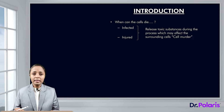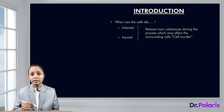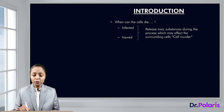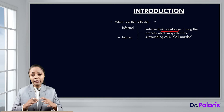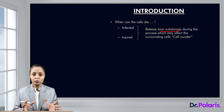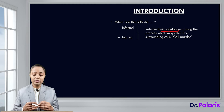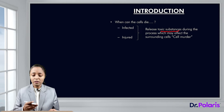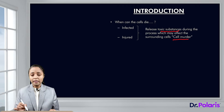When the cells are infected or injured, the cell death which occurs causes the cells to release toxic substances during the process, which can affect the surrounding cells. This leads to inflammation. So this type of cell death — necrosis — is referred to in layman's terms as cell murder, because something external is causing the cell death.